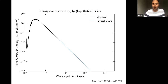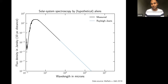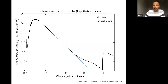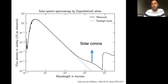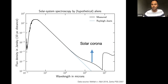Extending the thermal spectrum to longer wavelengths — toward radio frequencies — you'd expect the Rayleigh-Jeans tail of the Planck function. But when you actually measure it, it's completely different. At radio frequencies, you're not looking at the photosphere at all — it's not thermal emission. That bump you see in the radio corresponds to emission from the corona of the sun: high-energy, mostly relativistic particles emitting by the synchrotron mechanism.